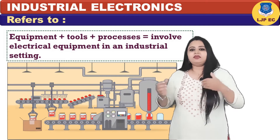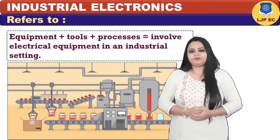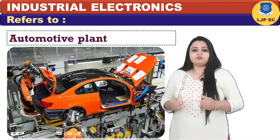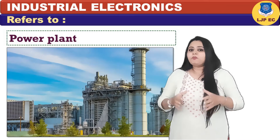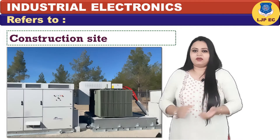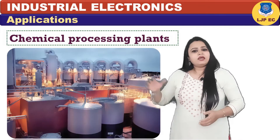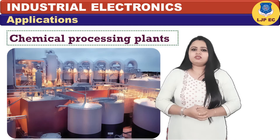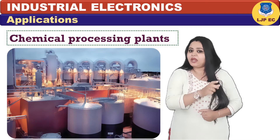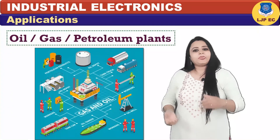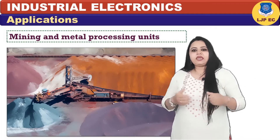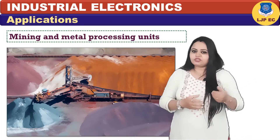Simply, industrial electronics refers to equipment, tools and processes that involve electrical equipment in an industrial setting. This could be a laboratory, automotive plant, power plant or construction site. Industrial electronics are also used most extensively in chemical processing plants, oil, gas and petroleum plants, mining and metal processing units.